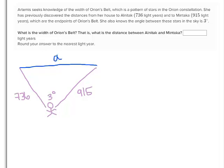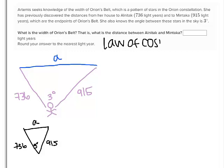So you can see I've got a triangle: 3 degrees down here, 736 is one side, 915 is the other side, and I'm looking for the third side. Given that you have two sides and the angle in between, that tells you to use the law of cosines. Now you should know how to set this up based on your previous practice, so I'll set the equation up and we'll go through it quickly.